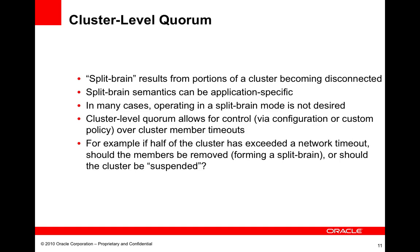The problem with split brain is that the semantics of what is correct are really application-specific. It really comes down to what it means to your application for there potentially to be two surviving parts of the cluster running. There are a lot of ways to slice this, but at the end of the day there's no one right way to handle this. We have logic in place to resolve the split brain scenario should the two sides become reconnected, but for some applications it's just not desired to allow the split brain to occur in the first place.